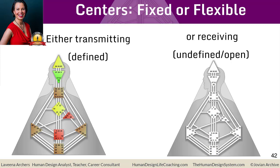For example, the 21 is about the heart muscle itself. The 40 is the stomach. The 51 is the gallbladder. The 26 is the thymus gland, and therefore your immune system.